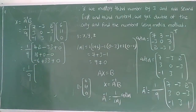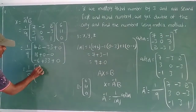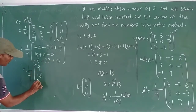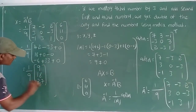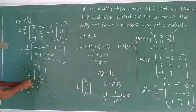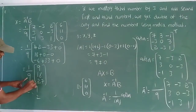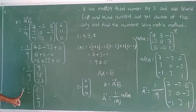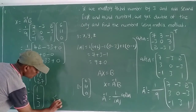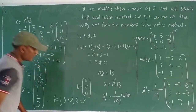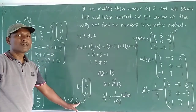That equals 1 by 9 into [9, 18, 27]. Dividing: 9÷9 equals 1; 18÷9 equals 2; 27÷9 equals 3. So capital X equals [1, 2, 3]. Therefore x equals 1, y equals 2, z equals 3.